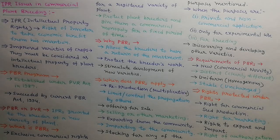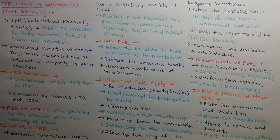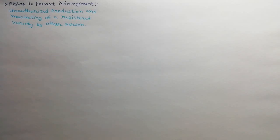Rights protected under PBRs include rights for commercial seed production, rights for marketing, rights to export and import, rights of authorization, and rights to prevent infringement. Infringement is the unauthorized production and marketing of a registered variety by another person.